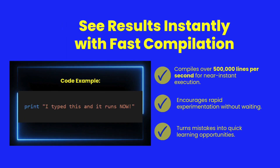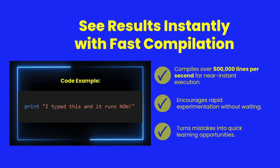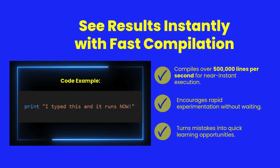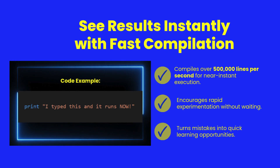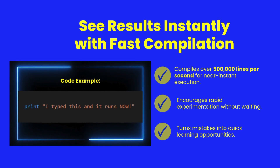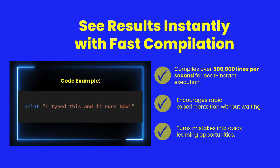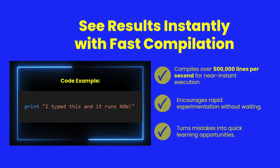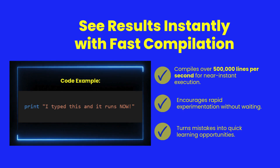One of Shear Power's biggest strengths is its instant feedback. It compiles at over 500,000 lines per second, allowing students to test their code immediately. This keeps them engaged, turning errors into quick lessons instead of frustrating delays.